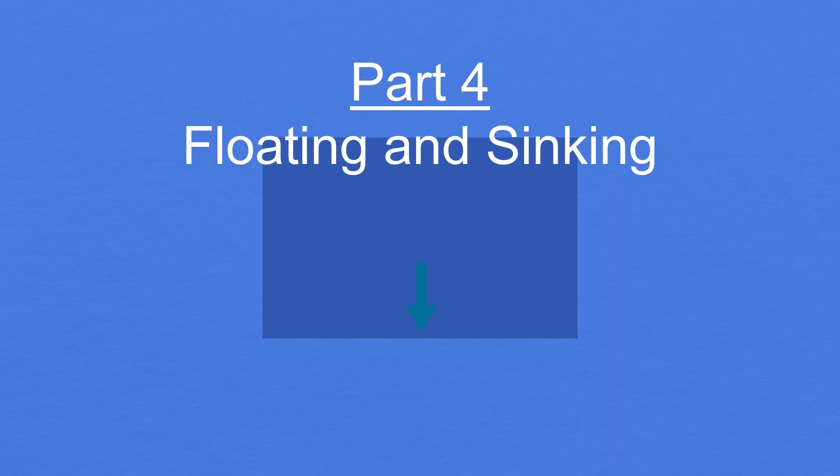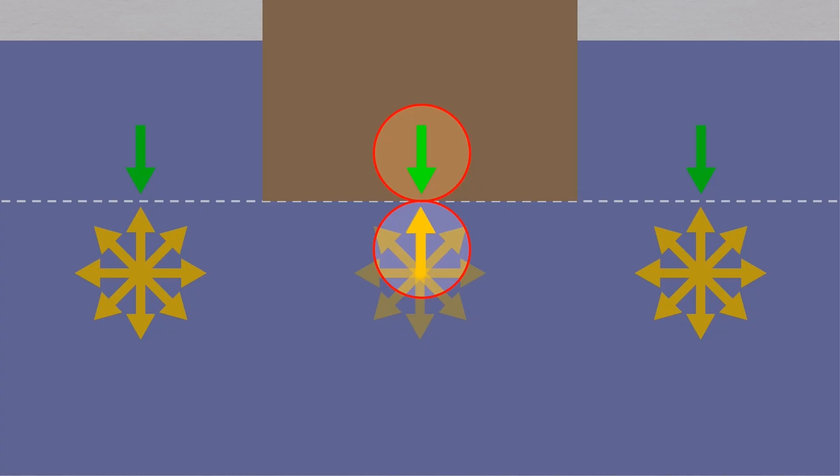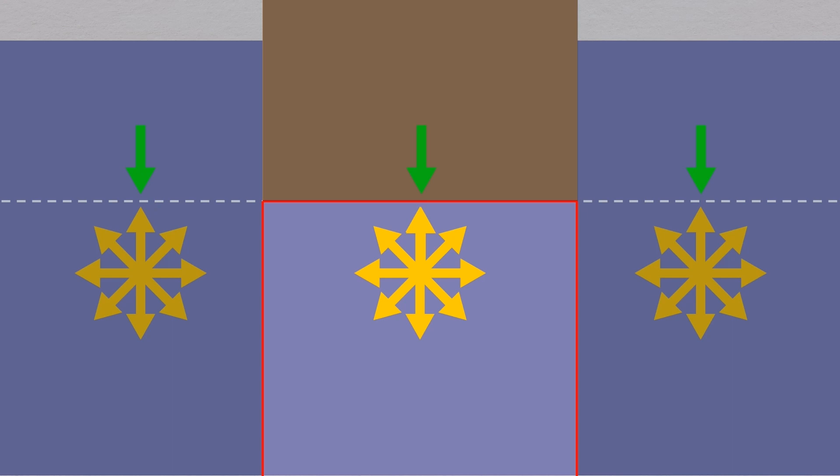Of course, if that's the case, why don't things continually float up and away? The answer, once again, is their own weight. Here is an object. The arrow represents the downward pressure of its weight. If you put it in our pool, it will sink to the point where the upward fluid pressure supports that weight. You can think of the object as coming to rest on a column of water, able to support its weight.